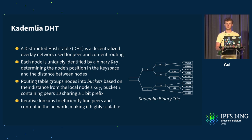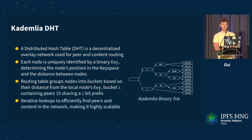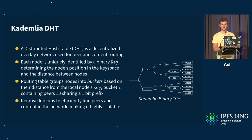The routing table is made of buckets. In each bucket, a node stores other peer IDs — for instance, in bucket zero I store nodes whose identifier has a zero common prefix, and in bucket 10 I store nodes that have a 10-bit common prefix with my own identity.